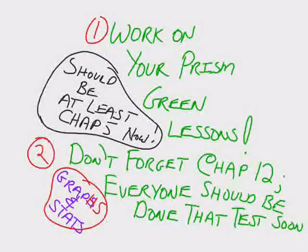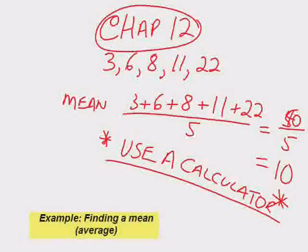Let's work on our prism lessons. Don't forget, you also have Chapter 12, Graphs and Statistics. Most people are done the Chapter 12, just the test to go. You can use a calculator on Chapter 12. You were asked to find the mean of 3, 6, 8, 11, and 22. Well, you add them all up, and you divide by the number of numbers, 5. Answer is 10.